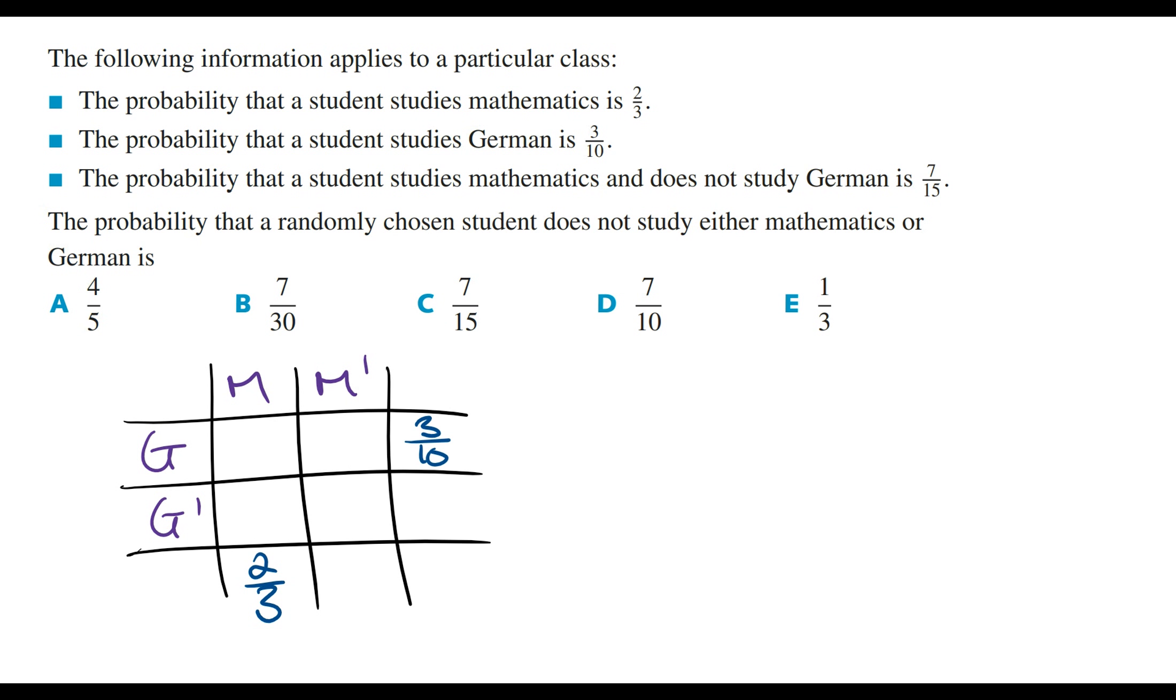The probability that a student studies maths and does not study German is 7 on 15, and so this box is going to equal 7 on 15.